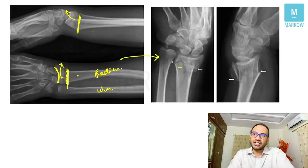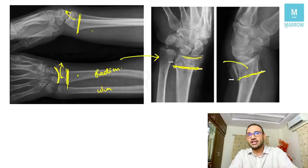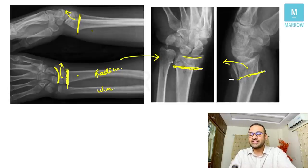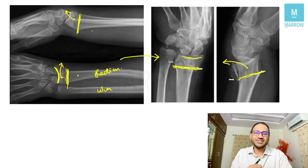On x-ray review: a fracture at the distal radius with extraarticular involvement and dorsal displacement of the distal fragment is Colles' fracture. This confirms it is a malunited extraarticular fracture of the distal end of the radius with dorsal displacement.